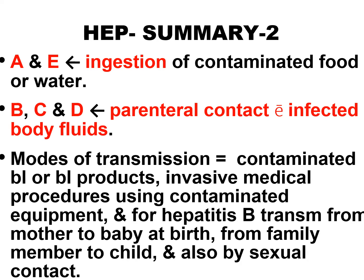Still on summary: Hepatitis A and E are due to ingestion of contaminated food or water. B, C, and D are through parenteral contact with infected body fluids. Modes of transmission include contaminated blood or blood products, invasive medical procedures, using contaminated equipment. For Hepatitis B: transmission from mother to baby at birth, from family member to child, and also sexual contact — this applies to B, C, and D.